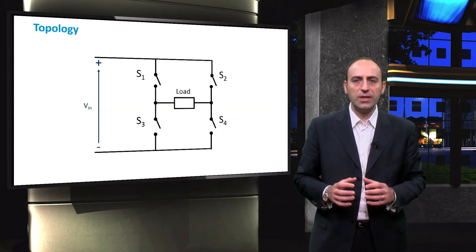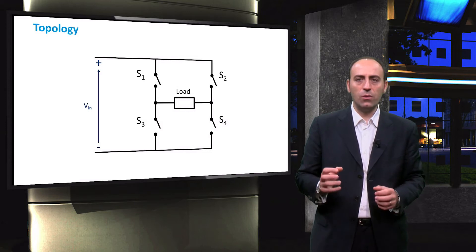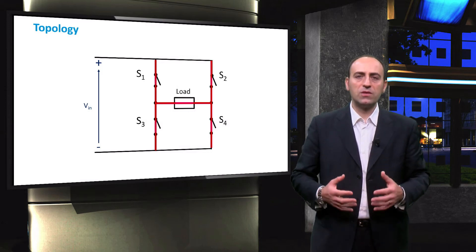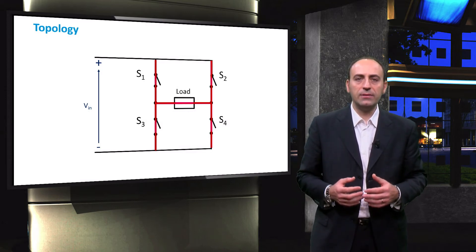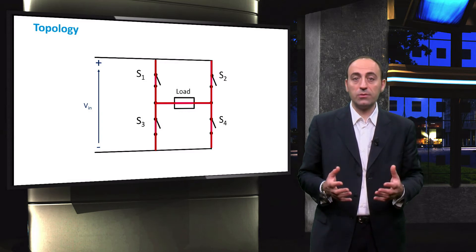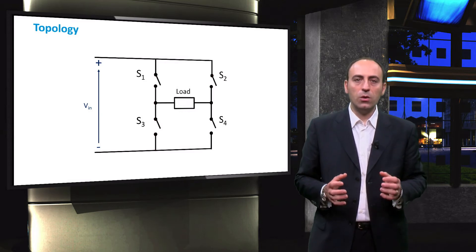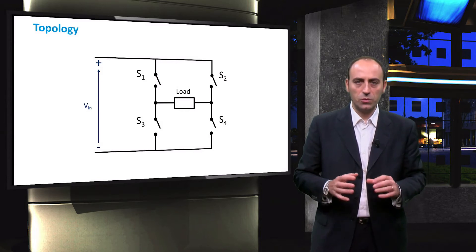The H-bridge presents four switches, named from S1 to S4. The name of this type of converter is given by the typical shape which resembles the letter H. The load here is situated in the middle, between the four switches.